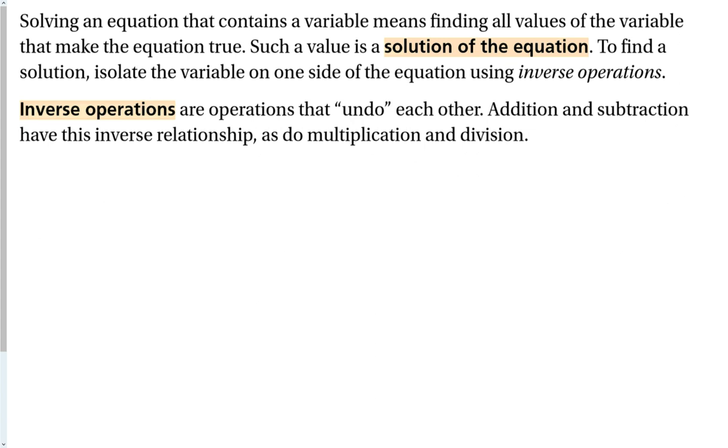Solving an equation that contains a variable means finding all values of the variable that make the equation true. This value is the solution of the equation. To find the solution, isolate the variable on one side of the equation using inverse operations. Inverse operations are operations that undo each other. Addition undoes subtraction, multiplication undoes division. If I have a square root, the inverse is to square both sides.